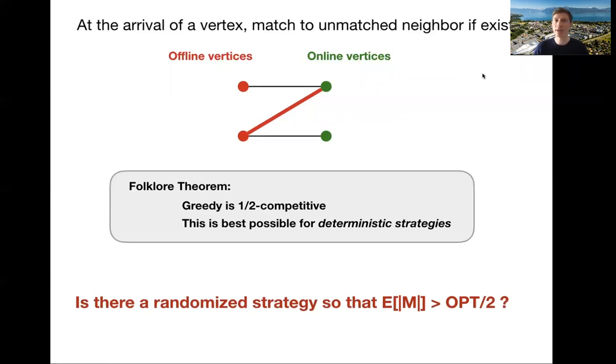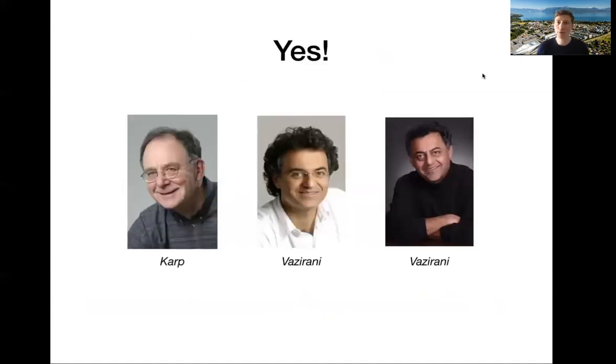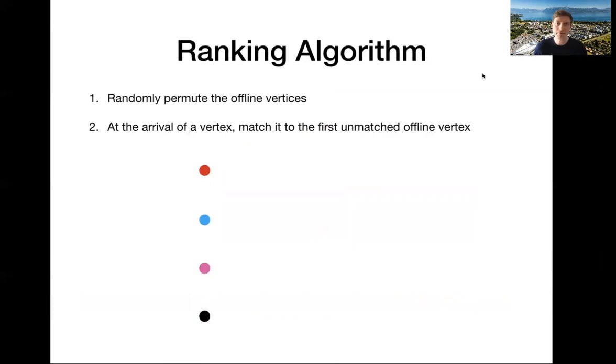Can we do better if we allow ourselves to use randomization? So is there a better randomized strategy that in expectation recovers more than half of optimal? The answer is yes. It was proven by a very influential paper by Karp, Vazirani and Vazirani. And they proposed a very beautiful algorithm that is called the ranking algorithm. It's almost like greedy, but with one twist.